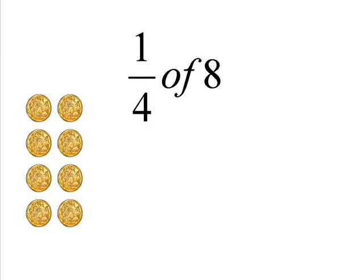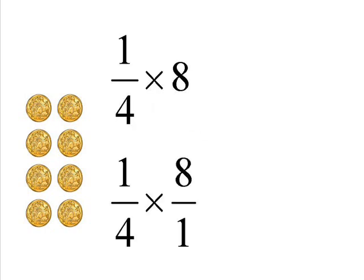How I do this is first off, as you probably already remember, wherever you see of, you can just change that to times. So, we're going to end up with a quarter times eight. Then you want to change eight so it's over one, so it's also a fraction. So, we end up with one quarter times eight over one.